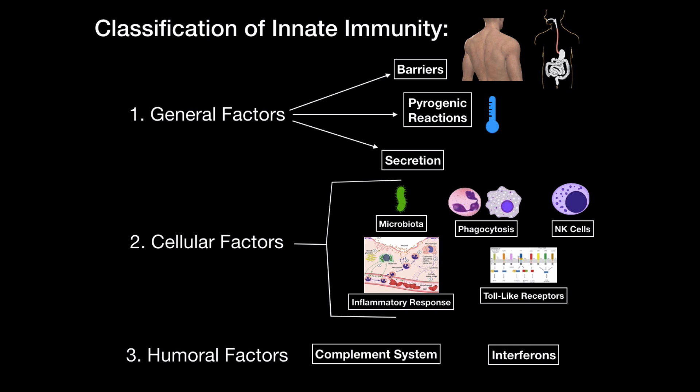I know this seems a lot, but trust me, it all gets logical once you understand the concept. In my opinion, if you want to learn immunology properly, you need to understand different parts individually before you can understand the whole concept together in a system. That's what I'm aiming to show you — everything individually first, and then put them all together. In this video, I'm mainly going to focus on the general factors, because those are really important factors to start with when you want to understand immunology.